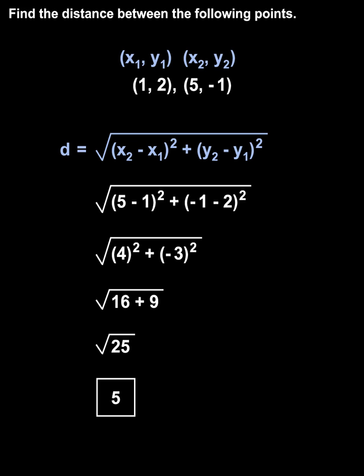So the distance between the points (1, 2) and (5, -1) is 5.